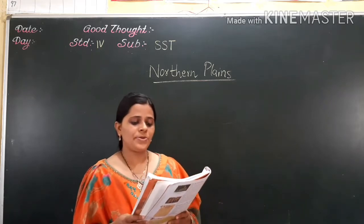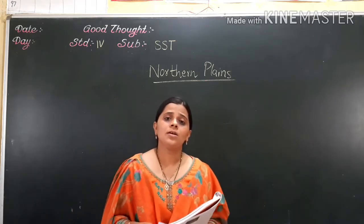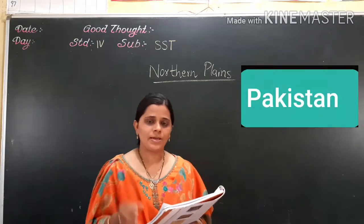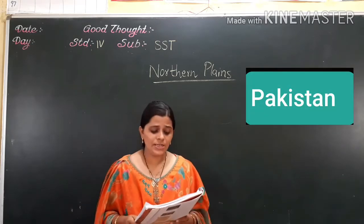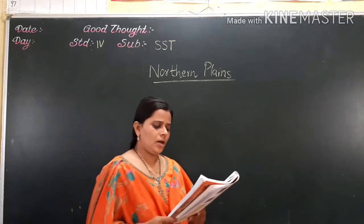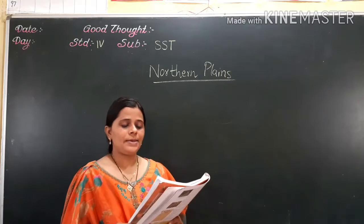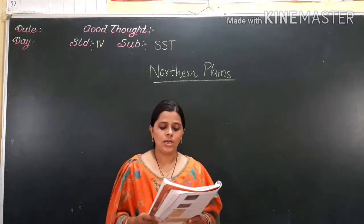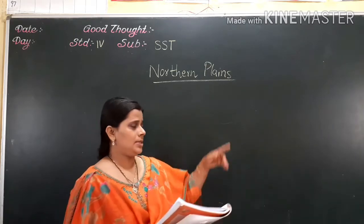Next: the Sutlej and its tributaries join the river and flow into the sea in Pakistan. So tick mark Pakistan. Now after that, we will discuss the fill in the blanks. The area drained by a river and its tributaries is called — what is the answer? Basin.